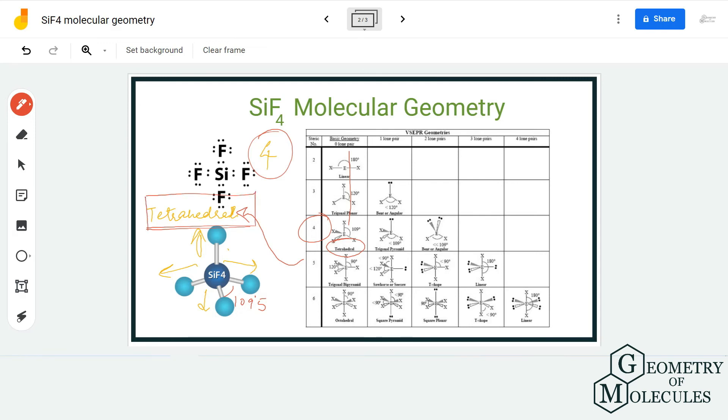Apart from that, you can also find out the AXN notation for this molecule. The AX notation would be AX4 because there is no lone pair. If you check that table out, you will find that even the molecules that have AX4 notation have tetrahedral molecular geometry.